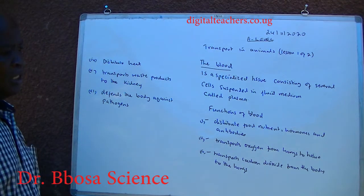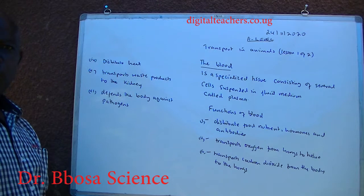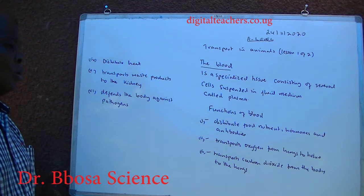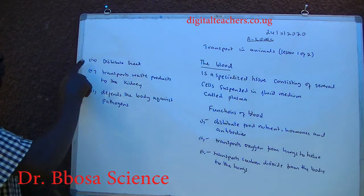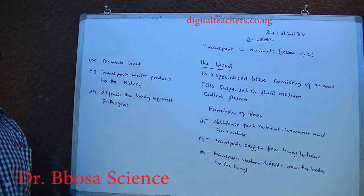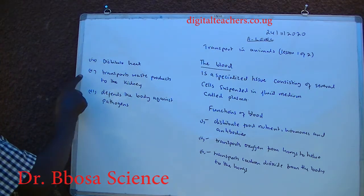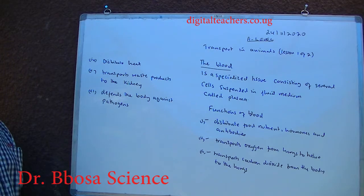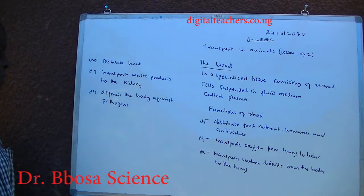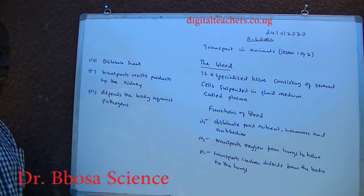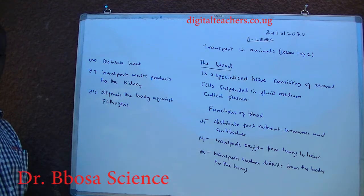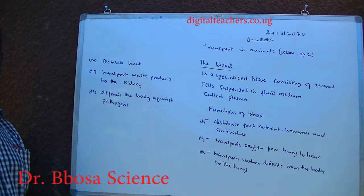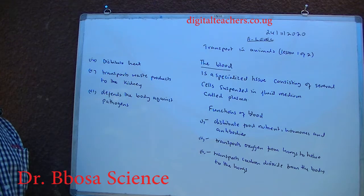3. transports carbon dioxide from tissue to lungs. 4. distributes heat. 5. transports waste products to the kidney to be removed. 6. defends the body against pathogens — it contains white blood cells and antibodies.